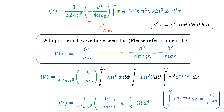Evaluating the three integrals: ∫₀²π sin²(φ) dφ = π. The angular integral ∫₀π sin³(θ) dθ = 4/3. For the radial integral, using ∫₀∞ rⁿ e^(−αr) dr = n!/αⁿ⁺¹ with α = 1/a and n = 3, we get 3! × a⁴ = 6a⁴.